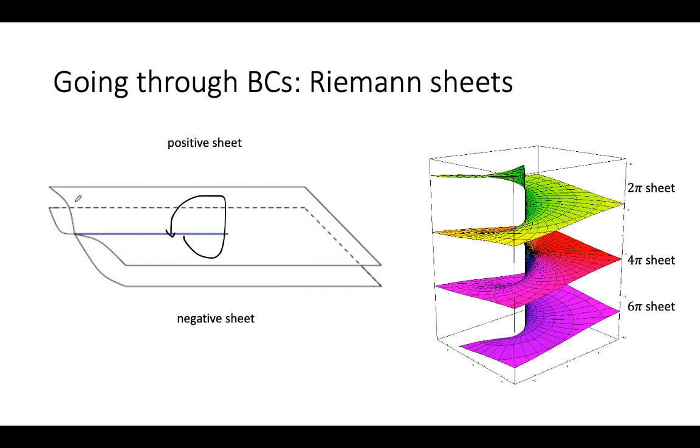What happens is, you can see from this picture, you start in the top sheet, the positive sheet, and if you go all the way around, you'll end up in a negative sheet, which is how you pick up a sign, because you went around 0. You've gone through the branch cut and ended up in a different sheet.